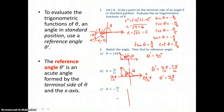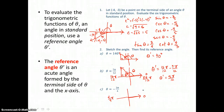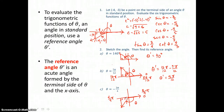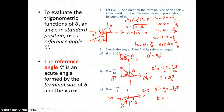Let's find the reference angle for negative 3 fourths pi. Here we're going in the negative direction from the positive x-axis. Halfway would be 1 pi, or 4 fourths pi, and a full circle is 2 pi, or 8 fourths pi. So we go only 3 fourths, moving into the third quadrant to find our terminal side. We draw our right triangle from the terminal side to the x-axis. Since we went 3 fourths pi, theta prime equals 4 fourths pi take away 3 fourths pi, giving theta prime equals 1 fourth pi.